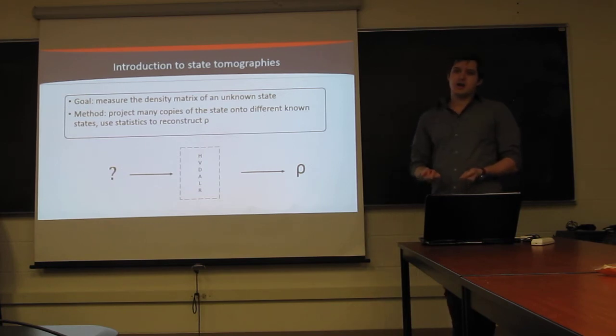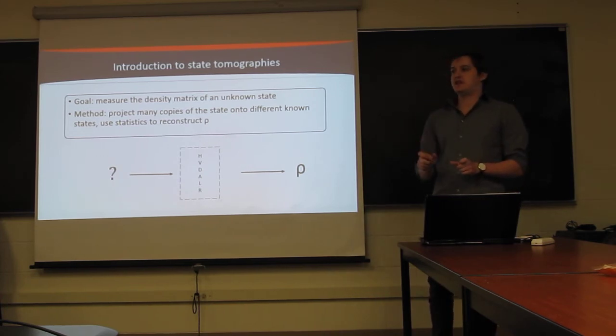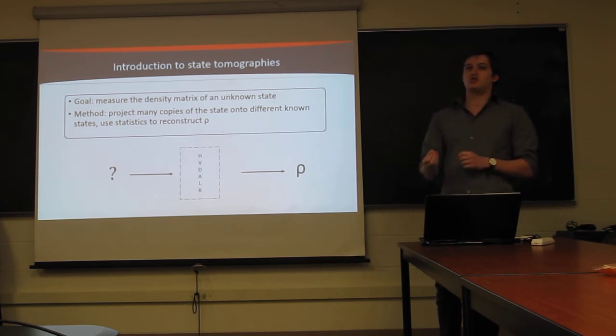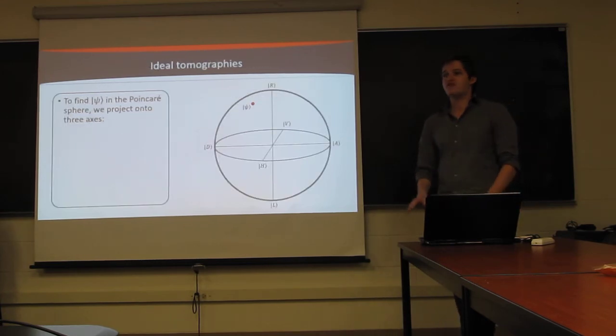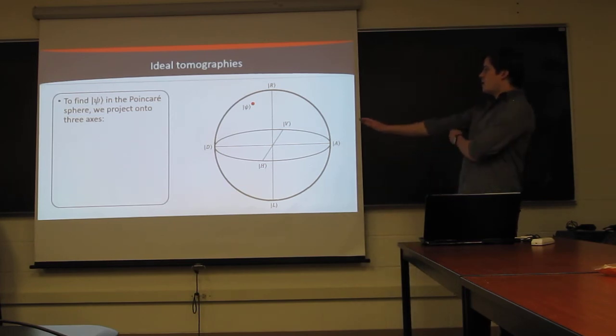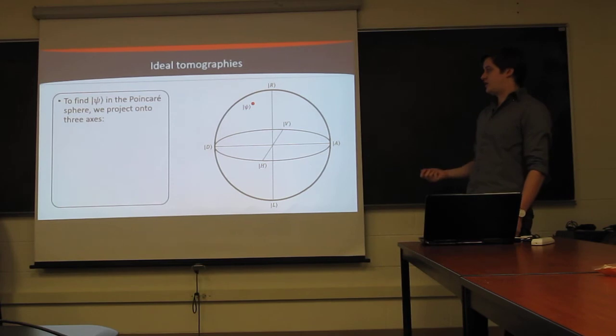Now, the idea of a tomography is that, rather than measuring it directly, we're going to see how that state overlaps with a bunch of different states that can form a basis, and then we'll use those statistics to reconstruct the original state. In the ideal case, where everything is perfect, this is pretty straightforward. Essentially, what we're doing is we're trying to find the coordinates of the state on the Poincare sphere.